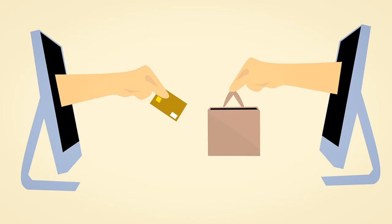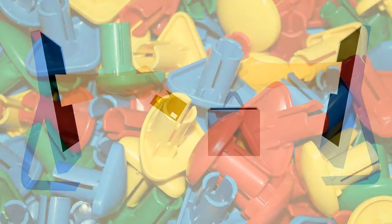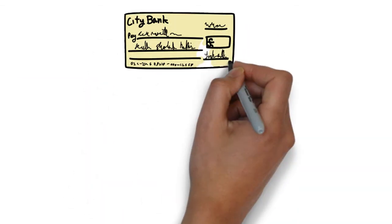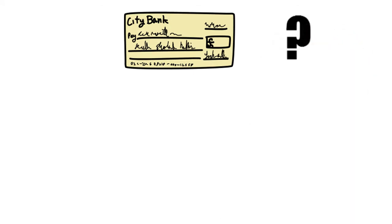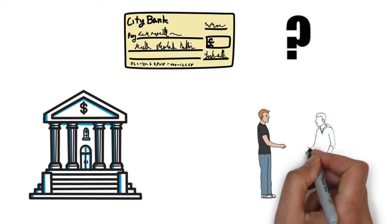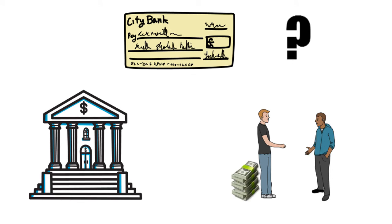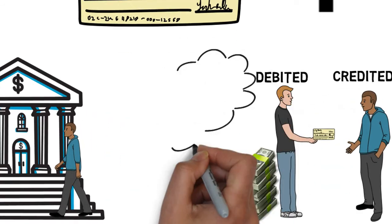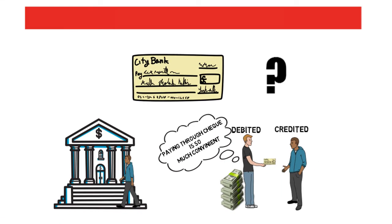Nowadays, you must have seen people making payments through debit cards and credit cards. This is also bank money, though since the cards are generally made out of plastic, some prefer calling them plastic money. You must have also heard of people going to the bank and depositing a cheque. Every account holder can take a chequebook from his bank and use it as a means of paying money to whoever he wishes. If person A has to make a payment of 5,000 rupees to person B, all he has to do is give him a cheque for 5,000, which person B can deposit into the bank. Person A's account gets debited by 5,000 and person B's account gets credited by 5,000, making the transaction possible without paying money in physical form. Instruments like cheques are hence called bank money or credit money.